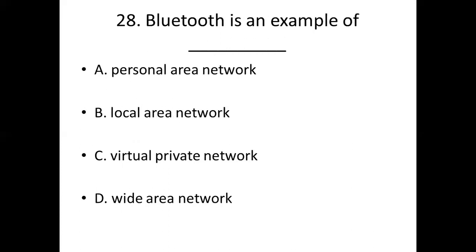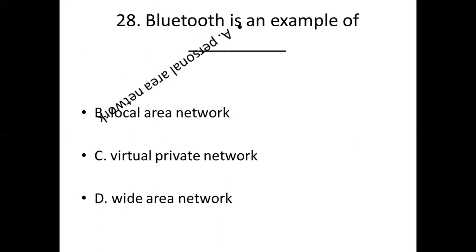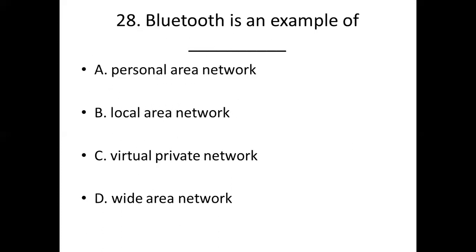Twenty-eighth bit: Bluetooth is an example of dash. Option A: Personal area network. Option B: Local area network. Option C: Virtual private network. Option D: Wide area network. Answer: Option A — Personal area network.